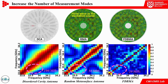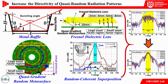Using more qualified patterns within the same bandwidth, the joint bunching method integrates the metal baffle, quasi-gradient random metasurface, Fresnel electric lens, and random coherent superposition methods. This approach improves the directivity of radiation patterns while maintaining correlation. This method is general and can be applied to various metasurface antennas for practical microwave computational imaging.